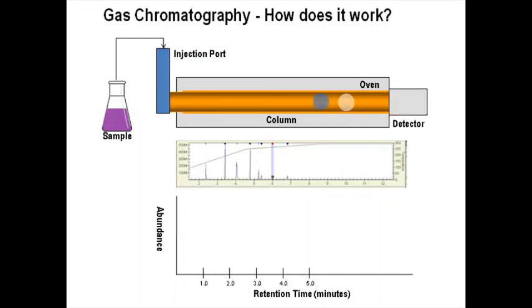When you inject the sample, then the compounds from the sample are being separated and they are reaching the detector one by one. Then, it gives you the output. This is what we call a chromatogram.